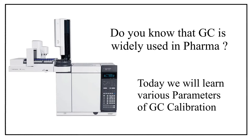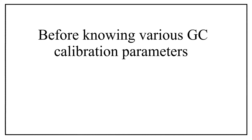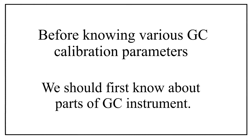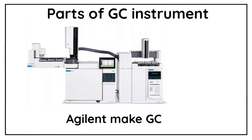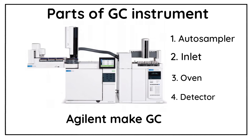Let's get started without any further delay. Before knowing the various calibration parameters of a GC instrument, we should firstly know what are the various parts of a GC instrument. Let us understand the various parts with the help of an Agilent make GC. These are the four main parts: number one is the auto sampler, number two inlet, number three oven, and number four is detector.